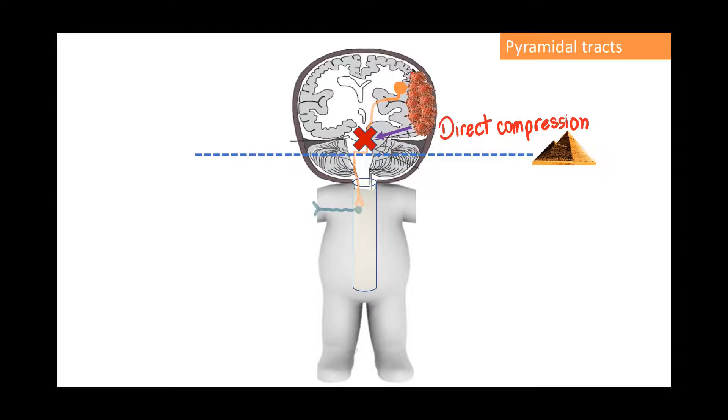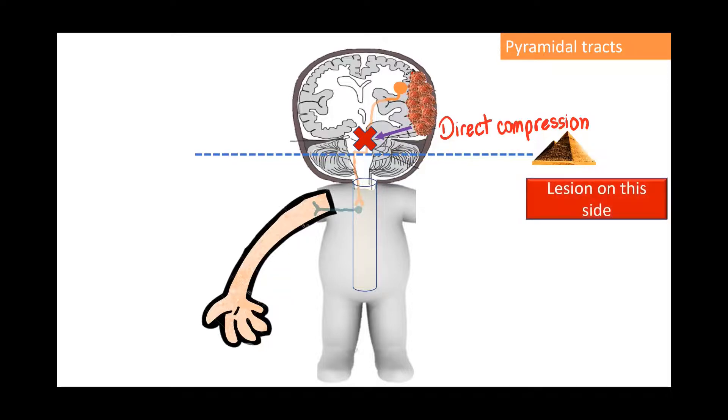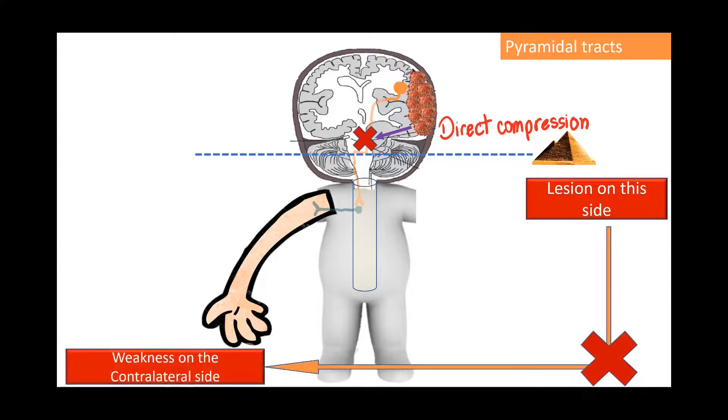This lesion will turn off this tract before the decussation of the fibers. And as a result, this patient will not have power to contract the muscles of his right side of the body. In conclusion, we say that a lesion on this side will lead to weakness on the contralateral side.